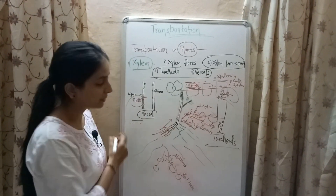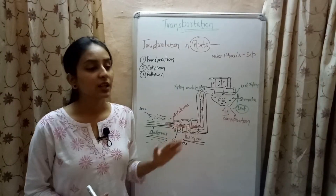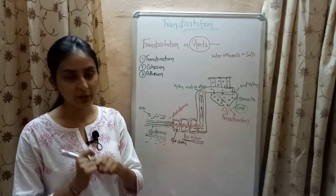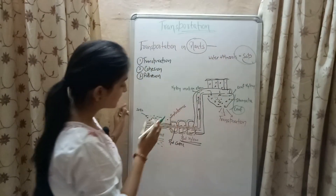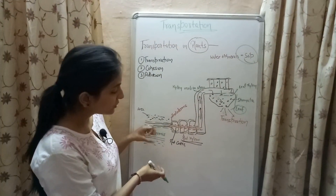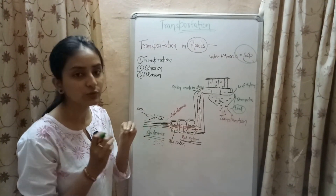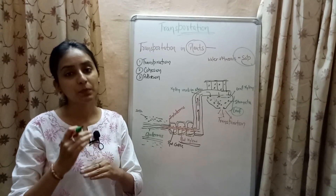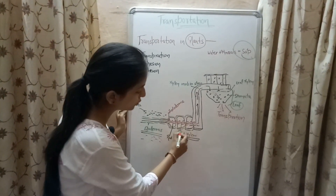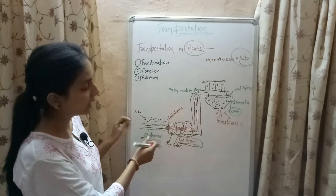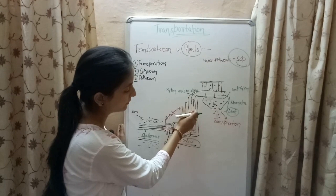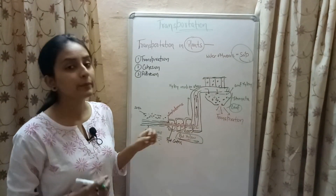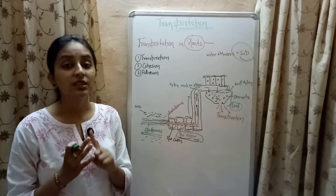Now let's see how water and minerals absorbed by the root are conducted to other parts of the plant. Water containing dissolved minerals, which together form sap, is absorbed by the root hairs. The absorbed water and minerals first reach the epidermis, then pass to the root cortex, then to the endodermis, and finally to the root xylem. The root xylem then carries the water and minerals to the stem region, and from the stem the water passes to other parts like leaves.